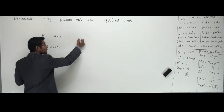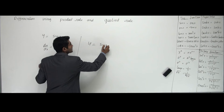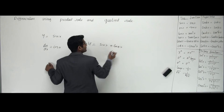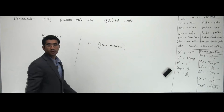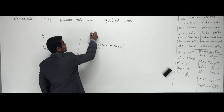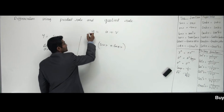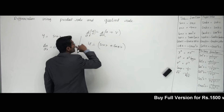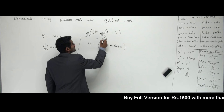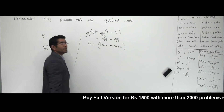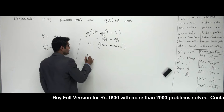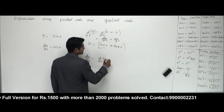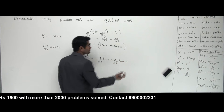Now if I get a function like y = sin x + log x, these functions are coming one after the other with a plus or minus sign. We have the simple formula: if y = u + v, then dy/dx = du/dx + dv/dx. So I can individually differentiate: d/dx of sin x + d/dx of log x.